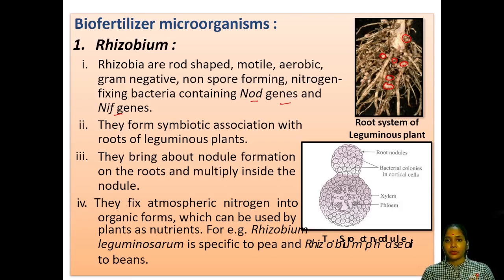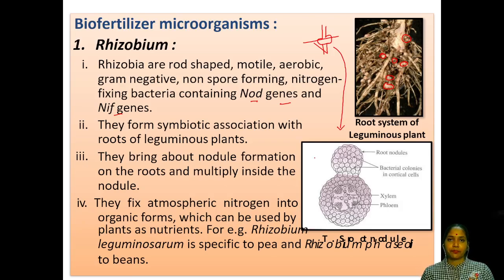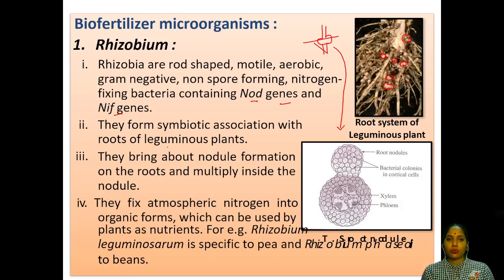Rhizobium forms symbiotic association with the roots of leguminous plants — protein-producing plants like pulses: all dal varieties, moong, gram, beans, and peas. They bring about nodule formation on roots and multiply inside the nodule. They fix atmospheric nitrogen into organic form which can be used by plants as a nutrient. Rhizobium leguminosarum is specific to pea plants; different Rhizobium species are found in different legume plants — they are very plant-specific.